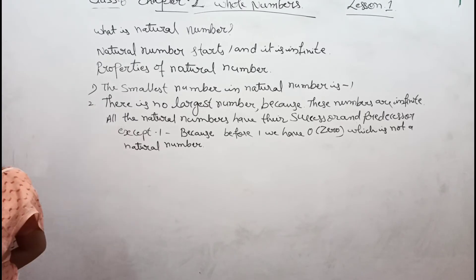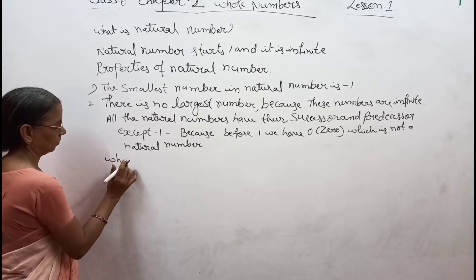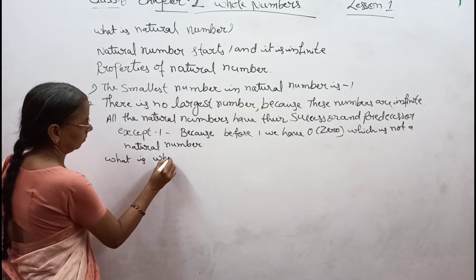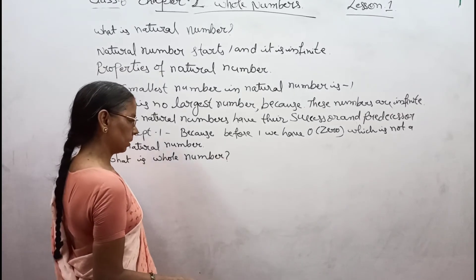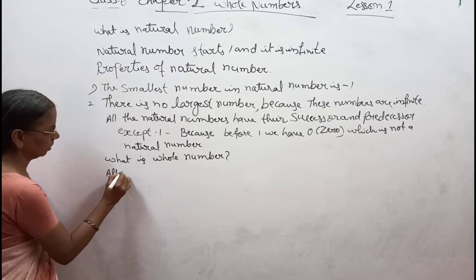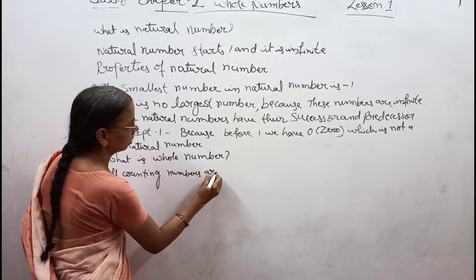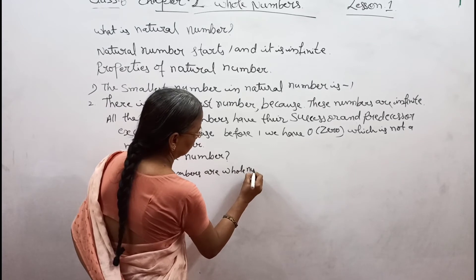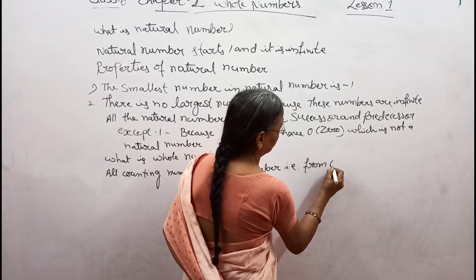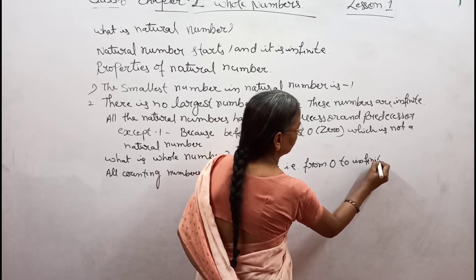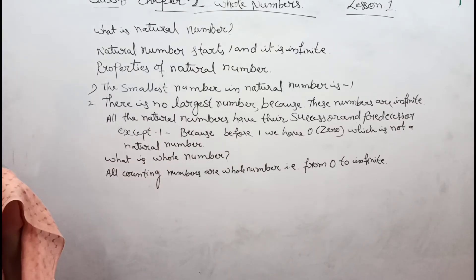What is a whole number? All counting numbers are whole numbers — that is from zero to infinite. We can say the whole numbers are all the counting numbers including zero.